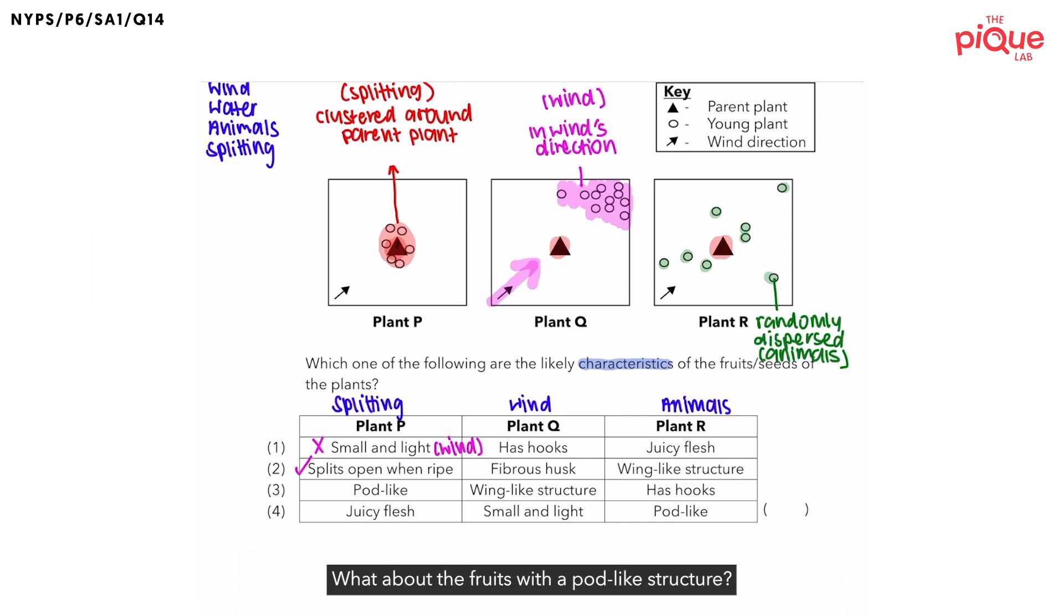What about the fruits with a pod-like structure? The pod-like structure would allow the fruit to split open when the fruit is ripe, throwing the seeds forcefully around the parent plant. This causes the seeds to be clustered or scattered around the parent plant as shown in the diagram above. What about the fruits with a juicy flesh? If the fruits have a juicy flesh, most likely they are dispersed by animals.